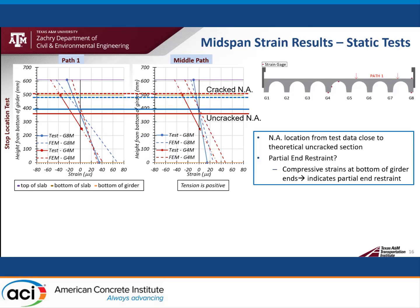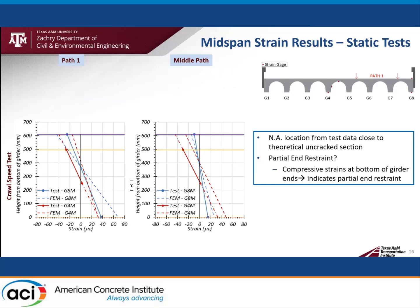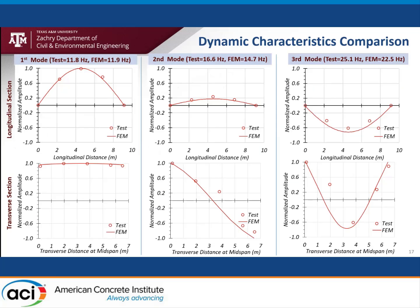Similar observations were also noticed for the crawl speed test. The natural frequencies and mode shapes of bridge CM5 were obtained from the accelerometer data. As can be seen for the first three modes, both the natural frequencies and mode shapes obtained from the FEM models match closely with the test results.